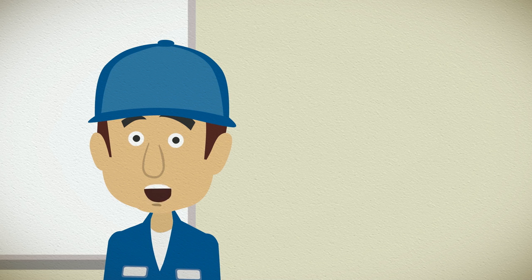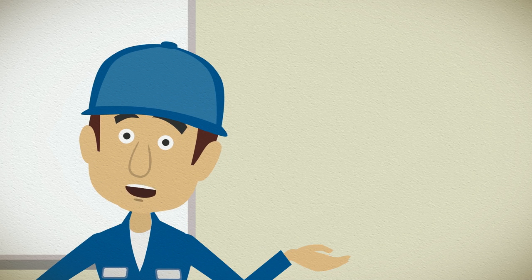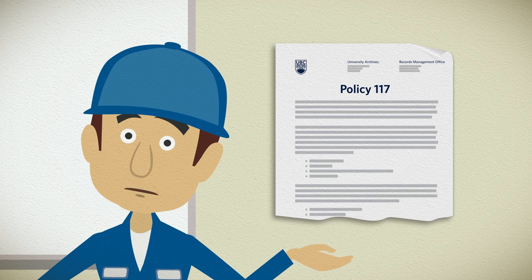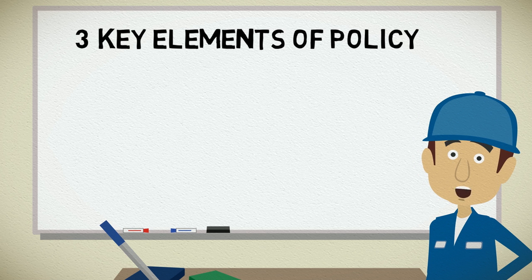UBC has a policy governing how all university records must be treated. Policy 117 describes the records management life cycle — I encourage you to have a look through it. There are three key elements of the policy that you should know.